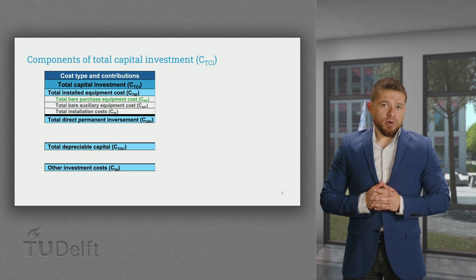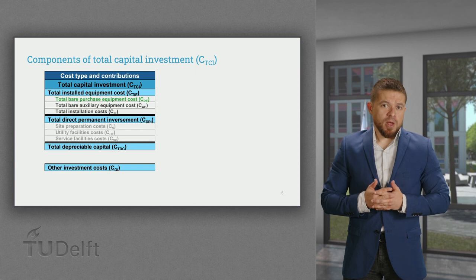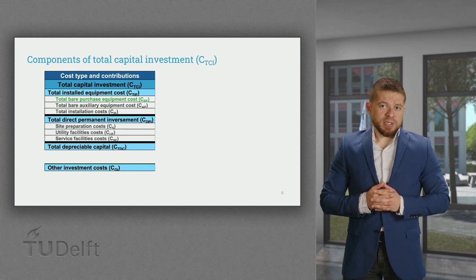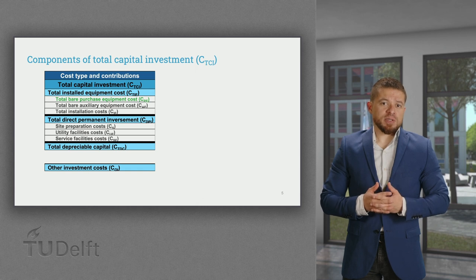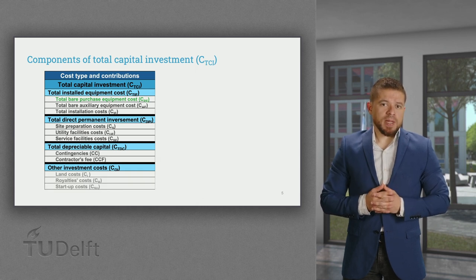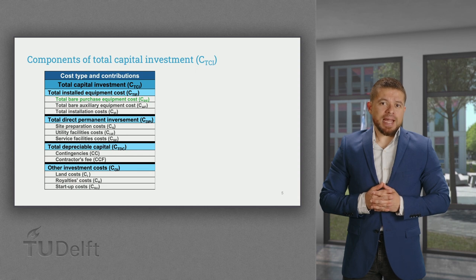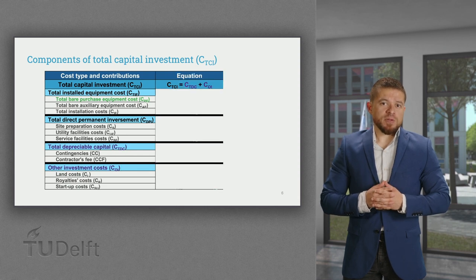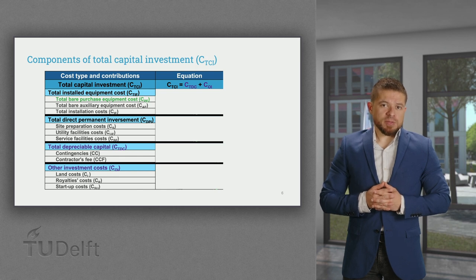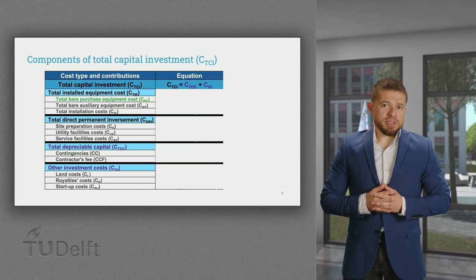Additional equipment-related costs are auxiliary units and installation expenses. Other direct and depreciable investments are related to utilities, services, site preparation, among others. The total capital investment can be calculated from the sum of the total depreciable capital and the other investment cost, which in turn depends on the total direct permanent investment and the total installed equipment cost.